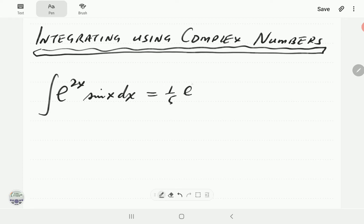We found that the answer is 1 on 5 e to the 2x times 2 times sine x minus cosine x plus c.